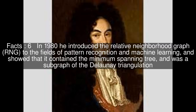In 1980 he introduced the relative neighborhood graph (RNG) to the fields of pattern recognition and machine learning, and showed that it contained a minimum spanning tree and was a subgraph of the Delaunay triangulation.